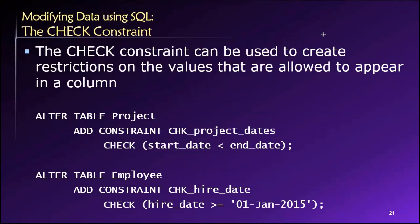For example, if we're recording our customers' date of birth, it wouldn't make any sense to allow values from the 1400s — nobody alive today was born in the 1400s. Similarly, it wouldn't make sense to allow birth year values in the 2100s. So if someone tries to store a birth date like the 5th of January 2142, that's obviously invalid and our check constraint would catch that.